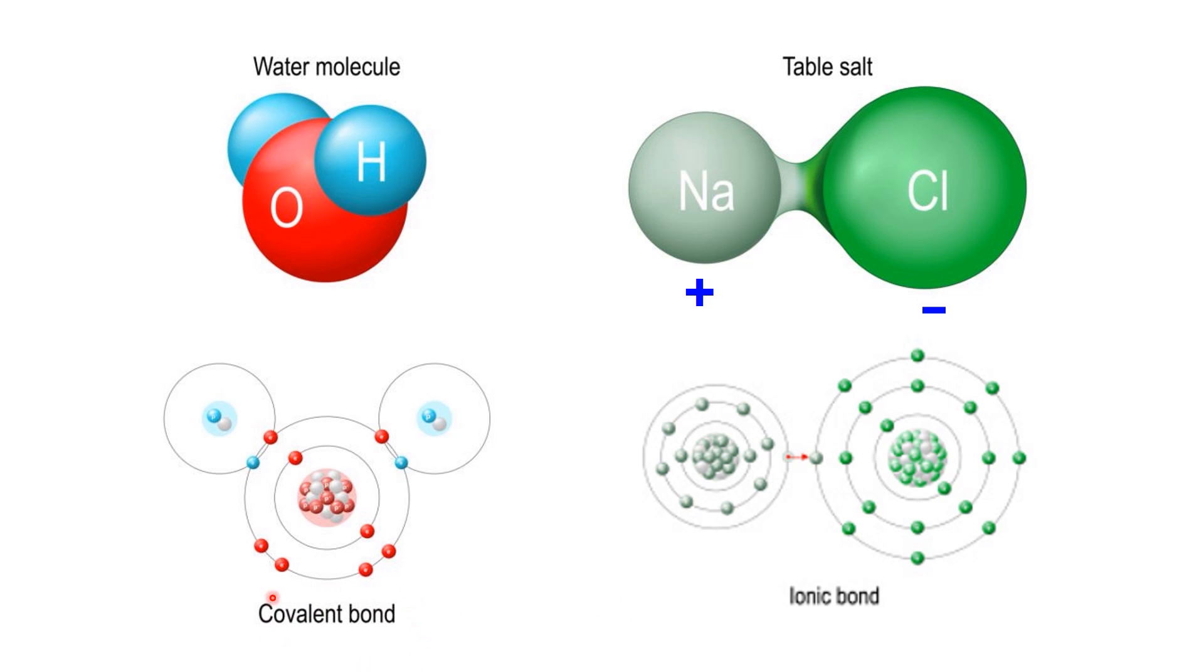In a covalent bond, however, the atoms don't transfer electrons. Instead, they share one or more pairs of electrons. This kind of bond usually forms between two non-metals, and the atoms remain neutral.